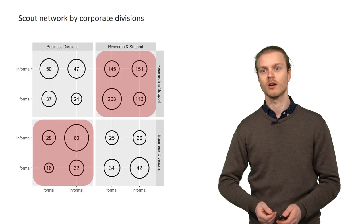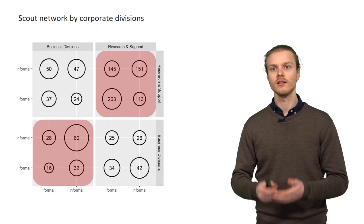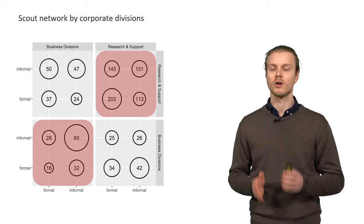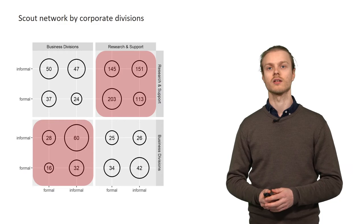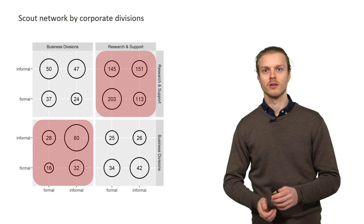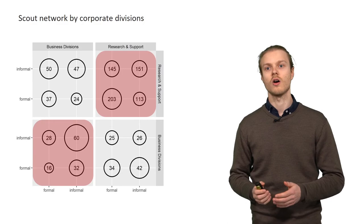Now if we remember the findings on core and radical scouting discussed earlier, we can see how the scouting network really brings together on the one hand scouting more focused on the core markets and technologies of the firm which is heavily practiced by informal scouts within the business divisions, and more radically oriented scouting which is mostly practiced by formal scouts within the research and support division. This could be argued to draw a picture of organizationally induced topical complementarity.